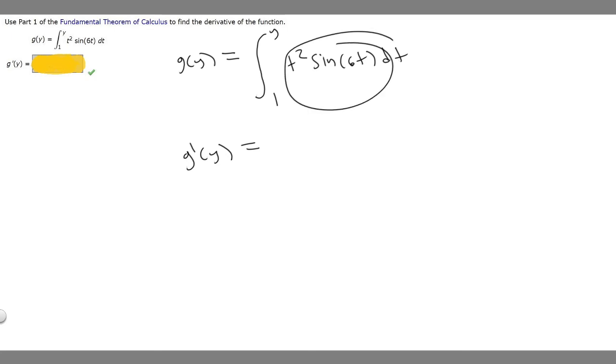So if we plug y into this, it's going to become y squared times the sine of 6y. So we basically just replace our t's with y's.